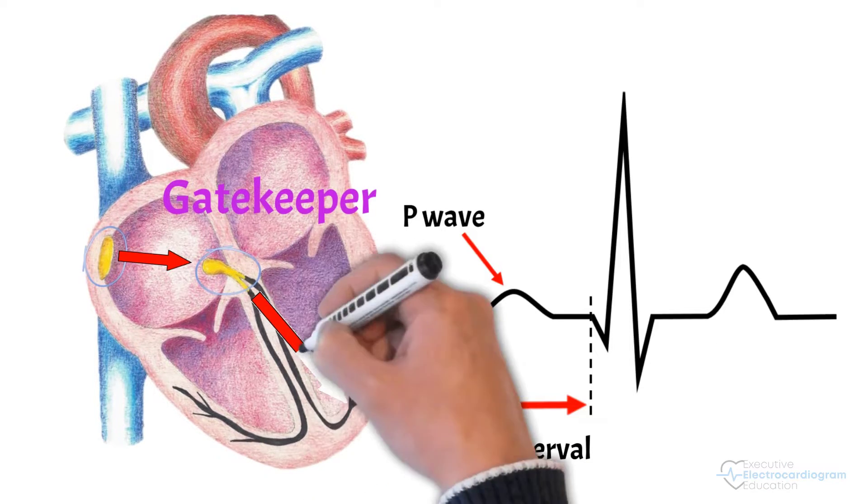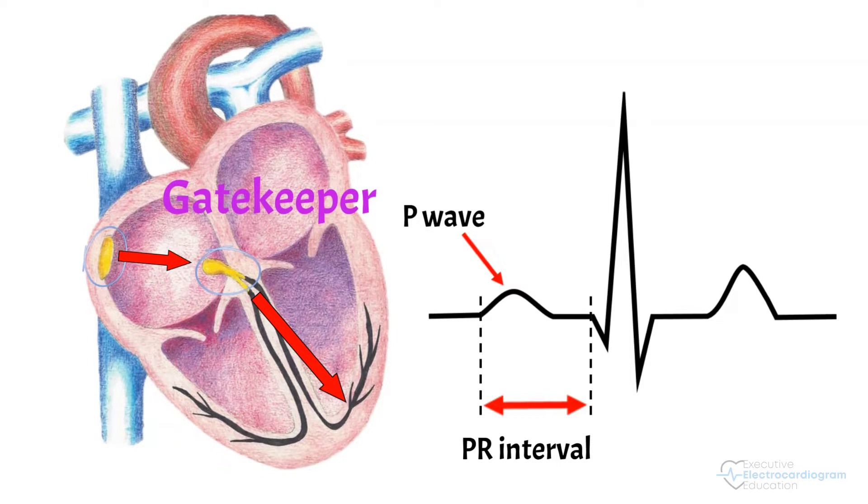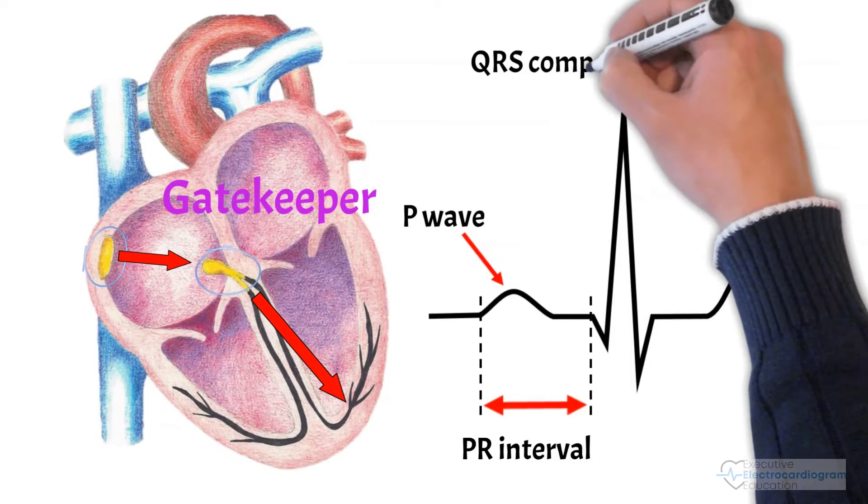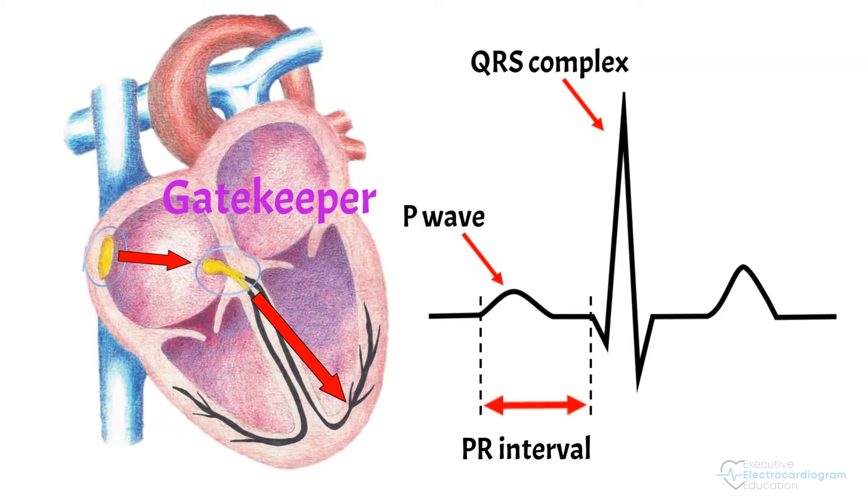Once the ventricles are ready, the AV node lets the impulse through, allowing ventricular depolarization and a QRS complex on the ECG.